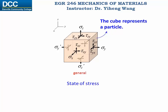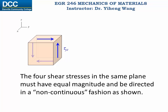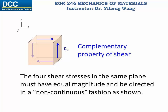In mechanics of materials, we still only study objects that are in equilibrium. Therefore, the equilibrium conditions still apply. From the equilibrium conditions we can draw two conclusions. First, the normal stresses along the same direction must be pairs with equal magnitudes and opposite directions. Second, the shear stresses within the same plane — in this case the yz plane — must have the same magnitude. Also, the two adjacent shear stresses must be either towards each other or away from each other. This is called the complementary property of shear.